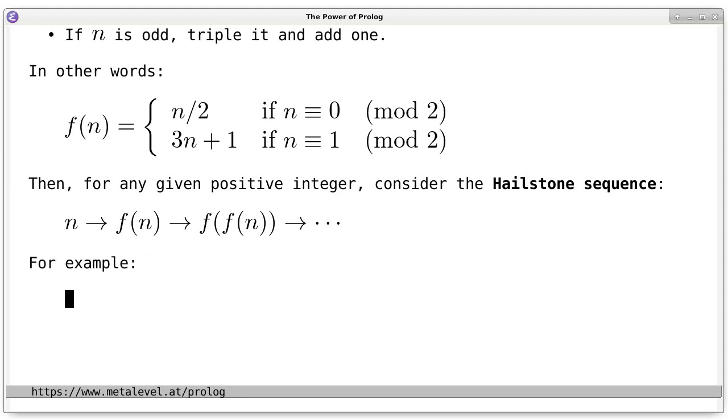For instance, if we start with 1, then 1 is clearly odd. So, the next integer is 3 times 1 plus 1, which is 4. Then, 4 is even. So, the next integer is 4 divided by 2, which is 2. And this is again even. So, the next integer is 2 divided by 2, which is 1.